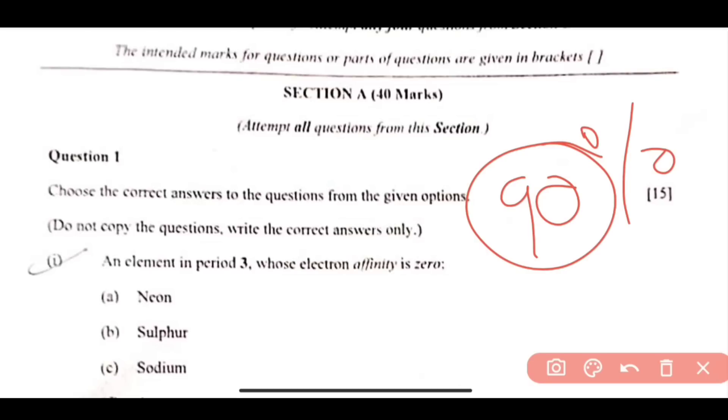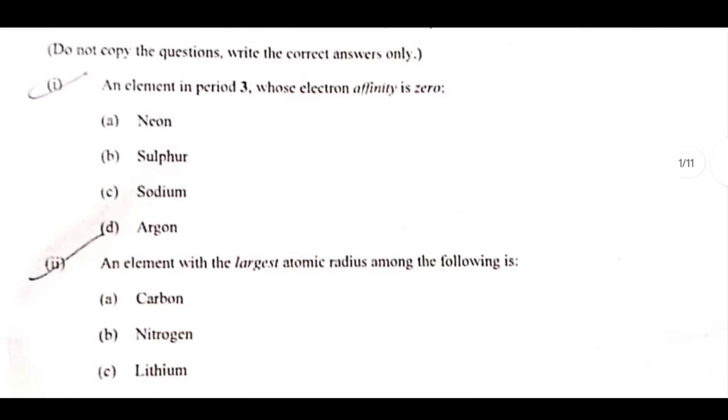The first question is, an element in period 3 whose electron affinity is 0. So it is Argon. We have discussed this on YouTube, MCQs on the periodic table, so definitely this one has come. Argon will be the answer, option number D is correct.